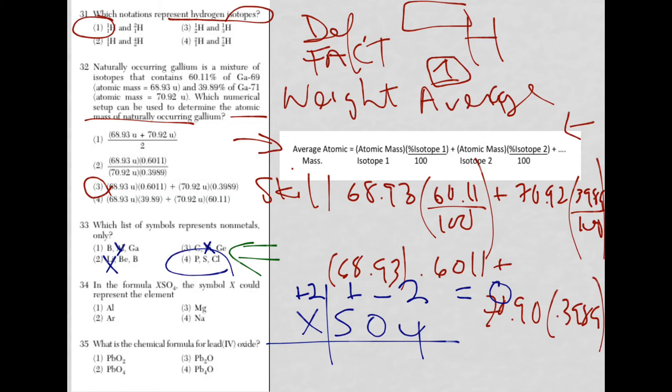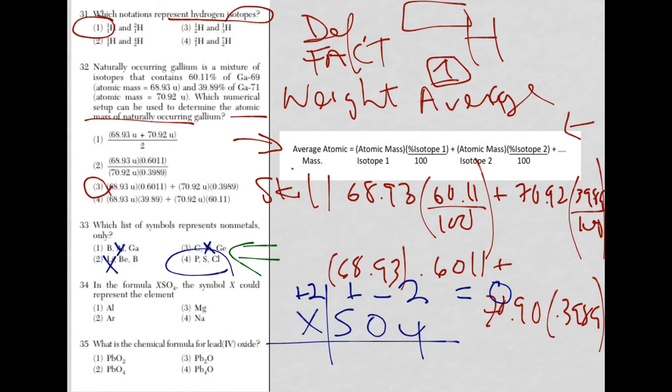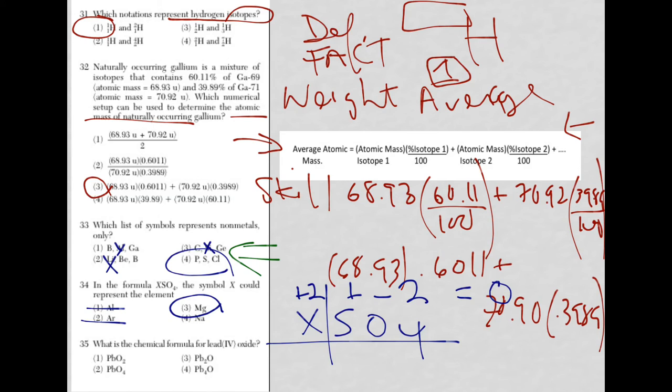It can't be aluminum - that has a plus three charge. Argon is a noble gas that doesn't want to bond with anything. Magnesium is our answer versus sodium, because magnesium has two electrons to give away (hence plus two), while sodium only has one valence electron (plus one). The answer is choice three, magnesium.